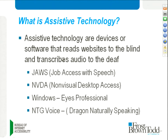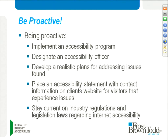Some of the assistive technologies to be aware of include JAWS (Job Access With Speech), a screen reader; NVDA (Non-Visual Desktop Access), a free screen reader; Windows Eyes Professional; and Dragon Naturally Speaking, for users with hearing problems. Once you have all this information, the recommendation is to be proactive. Don't wait for a cease-and-desist letter or complaint about your website. Taking a proactive stance puts you way ahead — rather than having compliance requirements forced upon you.